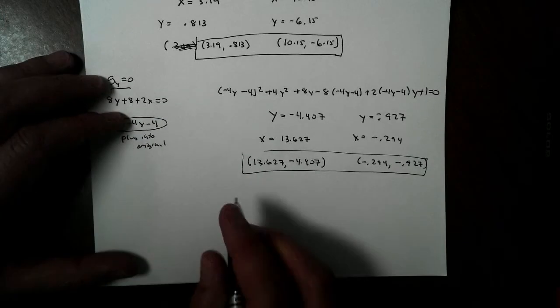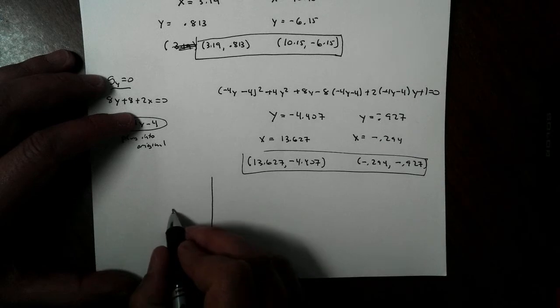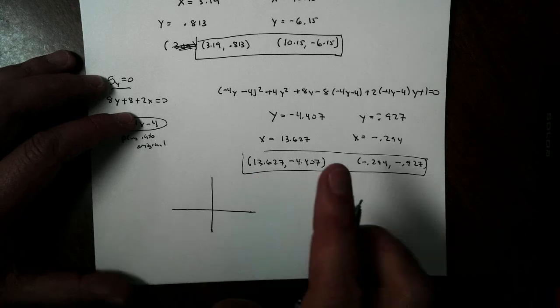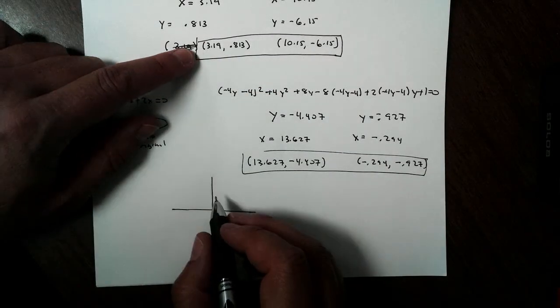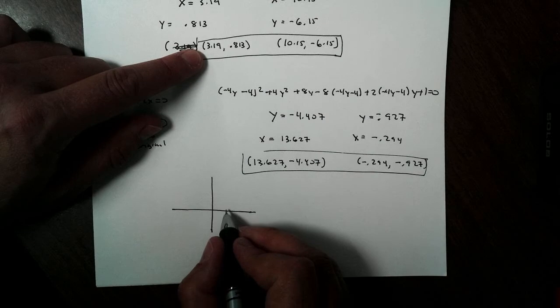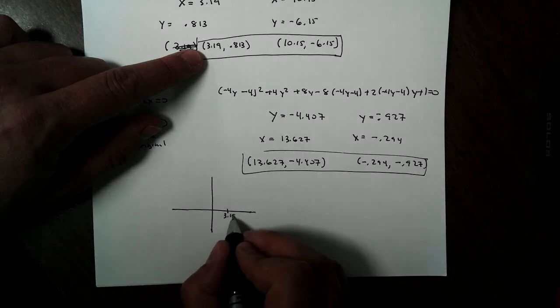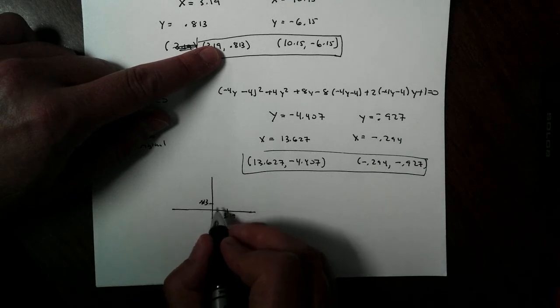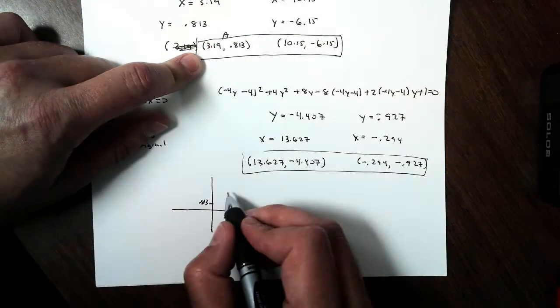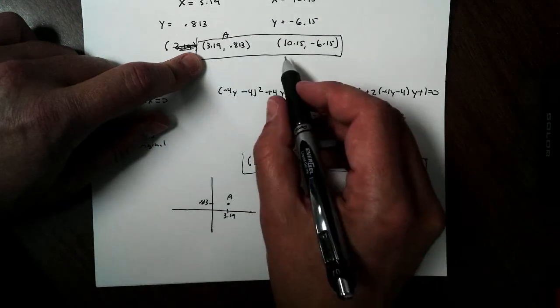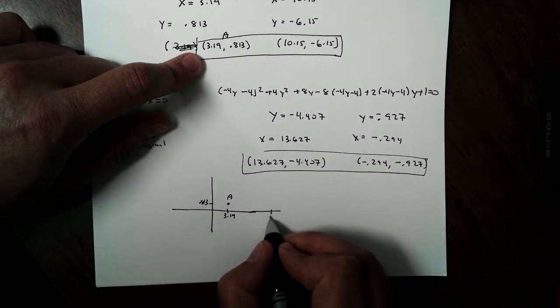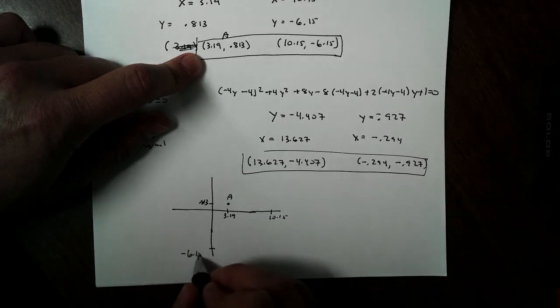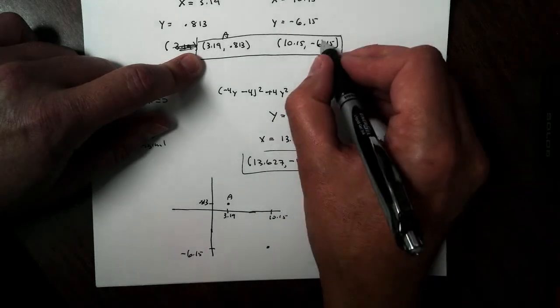When I look at this now, I'm going to get the following points. I'm just going to graph it, nothing to scale. 3.19 and positive 0.813, so there's one point. We'll call that point A. 10.15, way over here, negative 6.15. We'll call this point B.